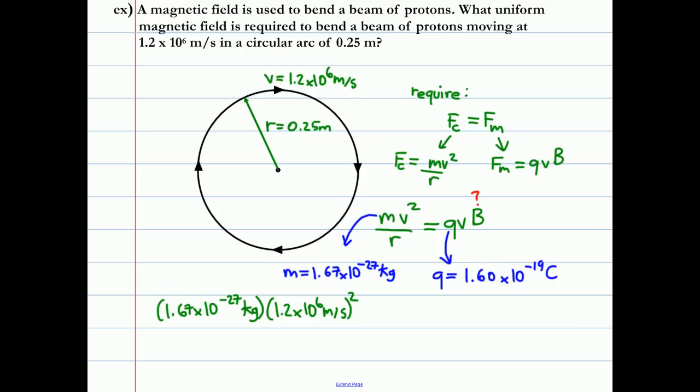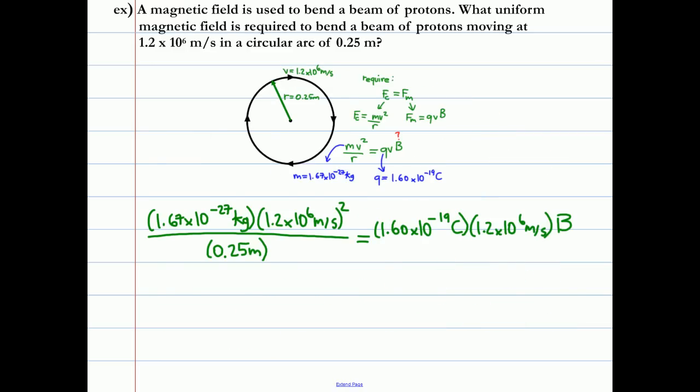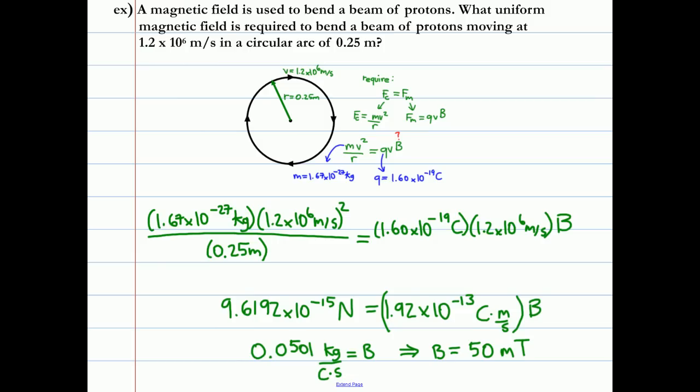Let's plug in our values. 1.67 times 10 to the minus 27 kilograms, multiply by the speed of the proton squared, don't forget to square it, all over 0.25 meters. Let that equal 1.6 times 10 to the negative 19 coulombs times the speed, 1.2 times 10 to the 6 meters per second, times B. Let's figure out what the left side is. 9.6 times 10 to the minus 15 newtons equals 1.9 times 10 to the minus 13 coulombs per second multiply by B. Divide the left by the right side, you get 0.0501 kilograms per coulombs seconds. That gives you that B is 50 millitesla.